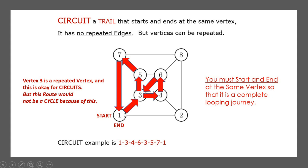In that circuit, we've only been along each line once: one to three, three to four, six to four, six back to three, three up to five, five to seven, and seven back to one. We did visit dot three a couple of times — that's okay on a circuit, but it wouldn't be okay on a cycle. So this one is definitely a circuit. On a circuit, you're only allowed to go along the connector lines once. There are two types of looping journeys: a cycle and a circuit.